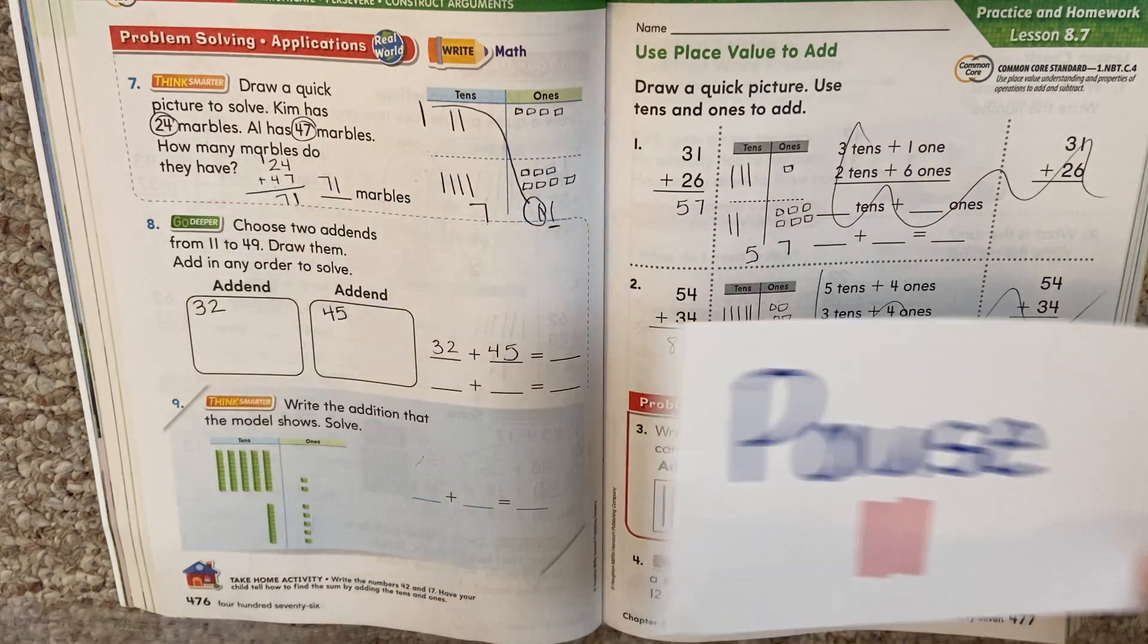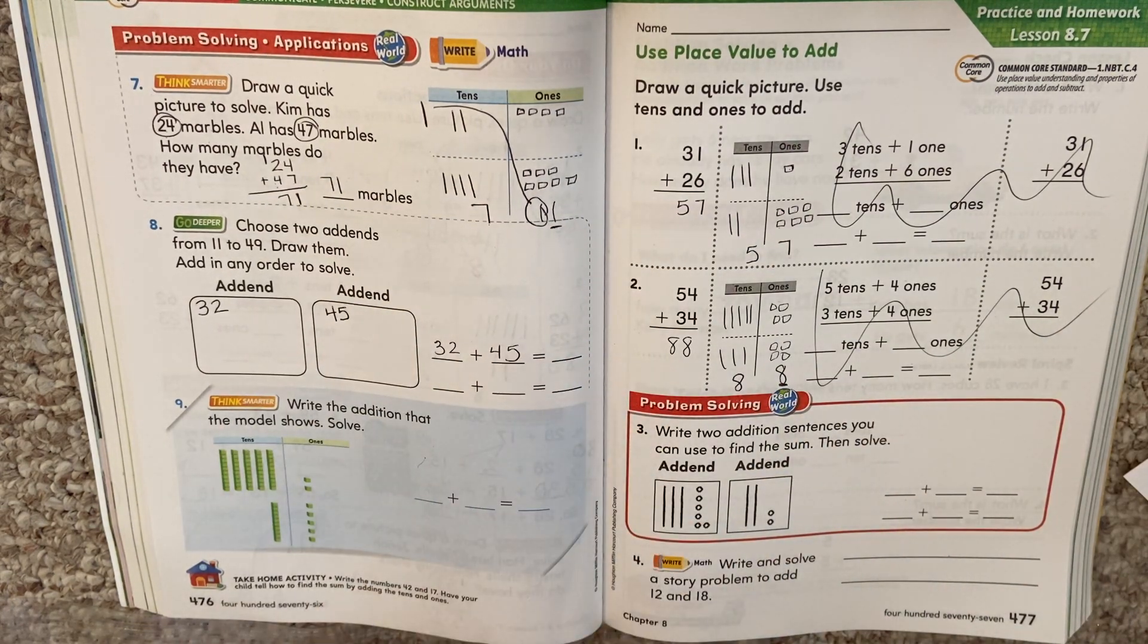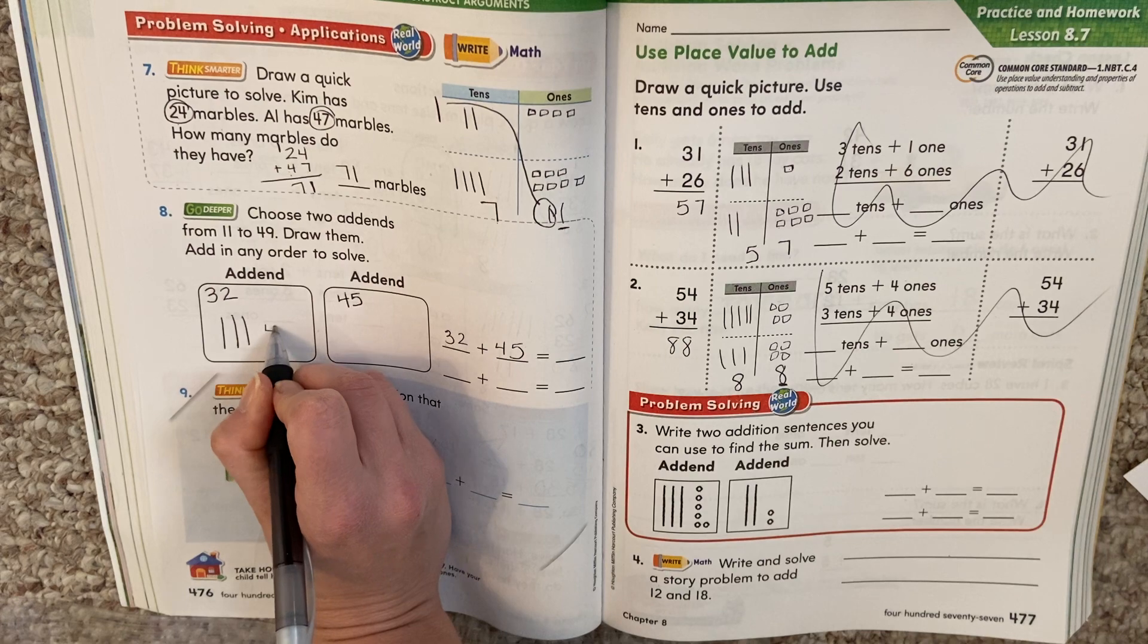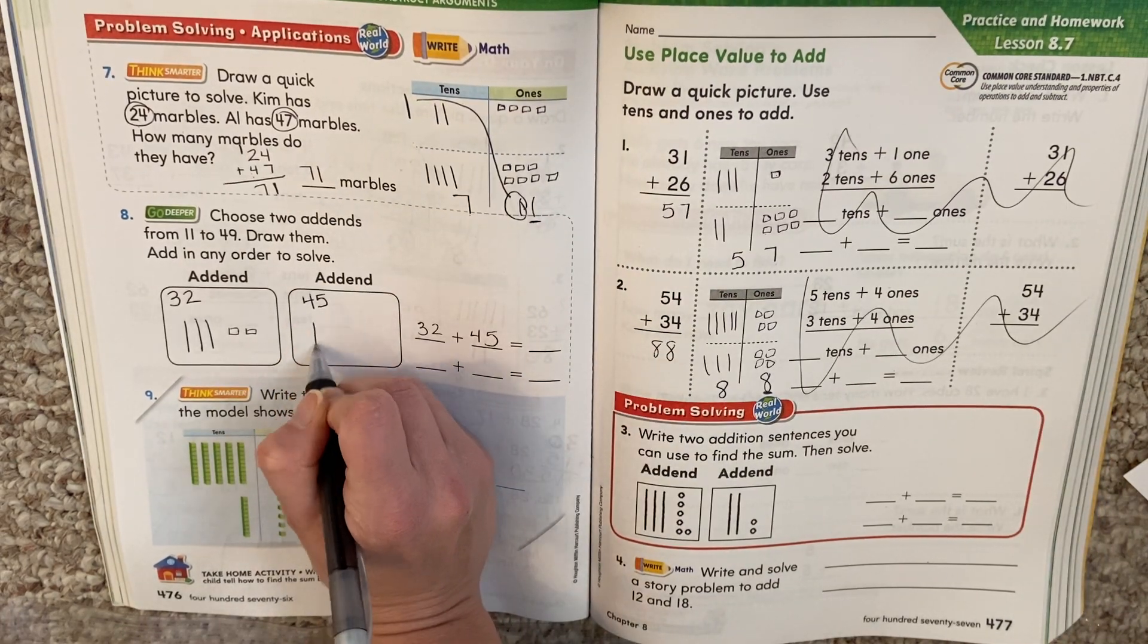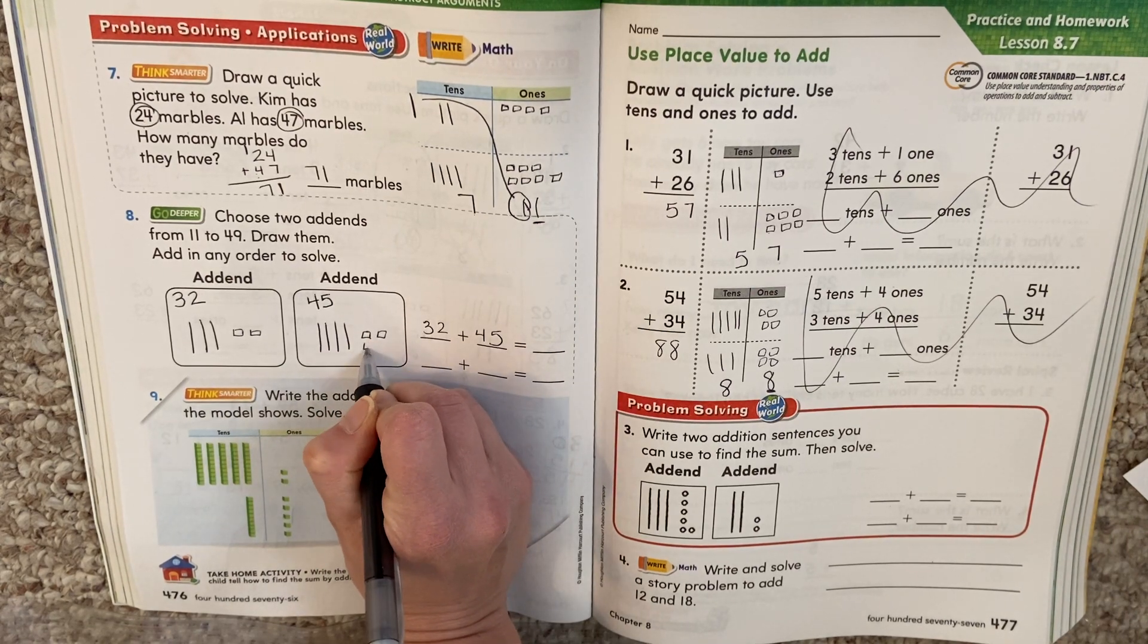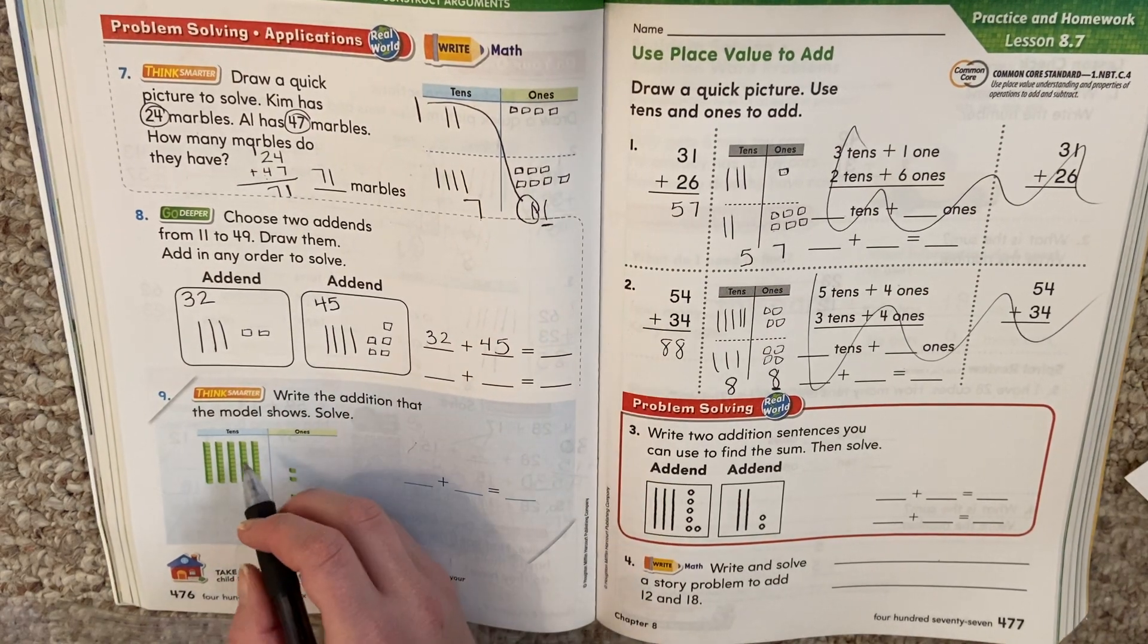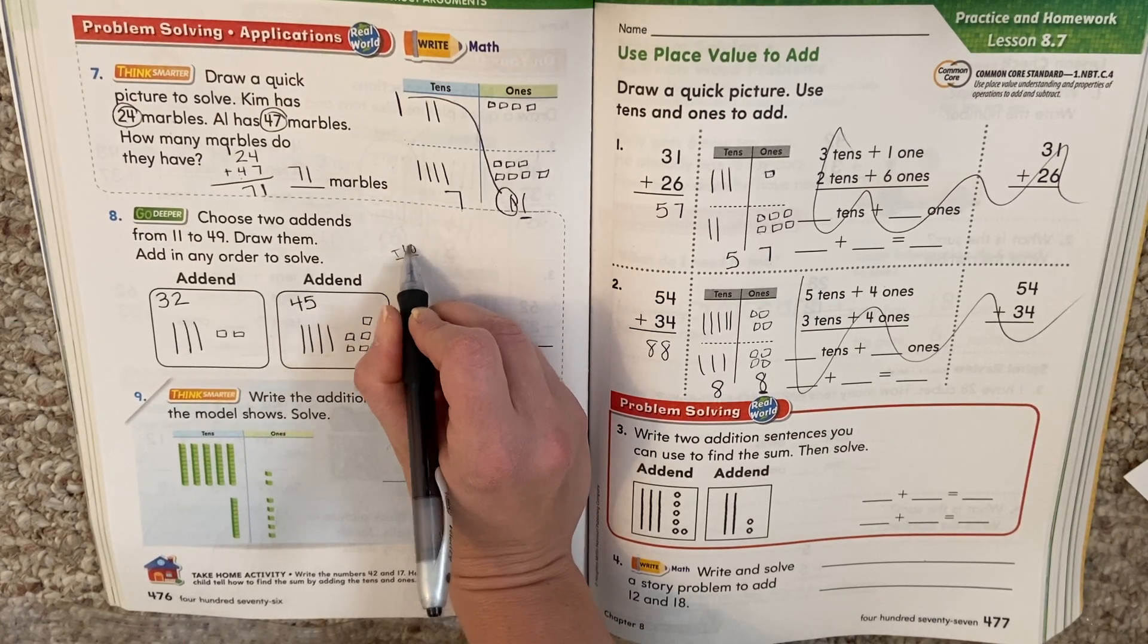If you're hitting play, that means you solved this. You have an answer right here. Let's see how you did. Thirty-two. You should have three tens, two ones. Forty-five. Four tens. Five ones. So now to add them up, I think I want to do this. Here's my TO chart.